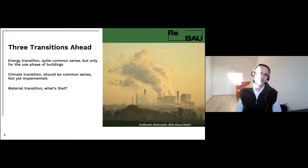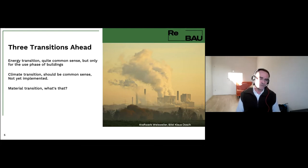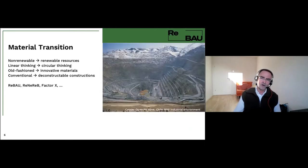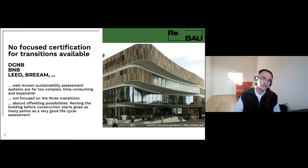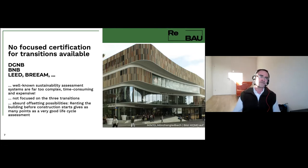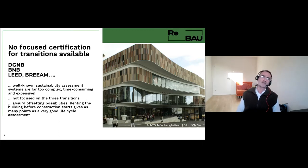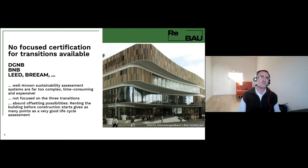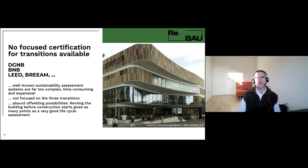There are a number of so-called sustainability rating systems in construction — DGNB, BNB, LEED, BREEAM, for example. All those systems are far too complex to be widely applied and therefore quite expensive. More importantly, they are not focused on these three transitions ahead. In addition, they sometimes allow for absurd offsets: if a building is fully leased before construction begins, exactly as many points are given as for an optimal life cycle assessment.